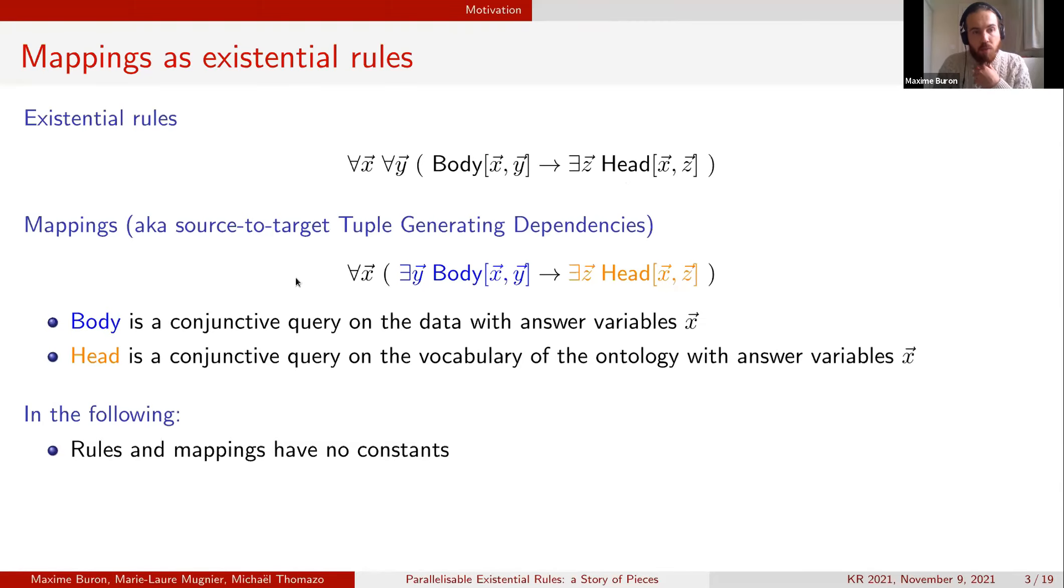The mappings can be considered as source to target existential rules where the body is a conjunction query on the data and the head is a conjunction query on the ontology. In the following we will consider that mappings and rules have no constant.